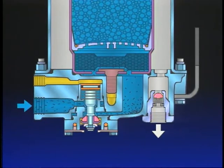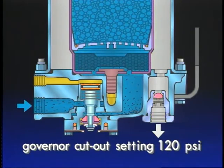The air dryer will remain in the charge cycle until air brake system pressure reaches the governor cutout setting of 120 PSI.